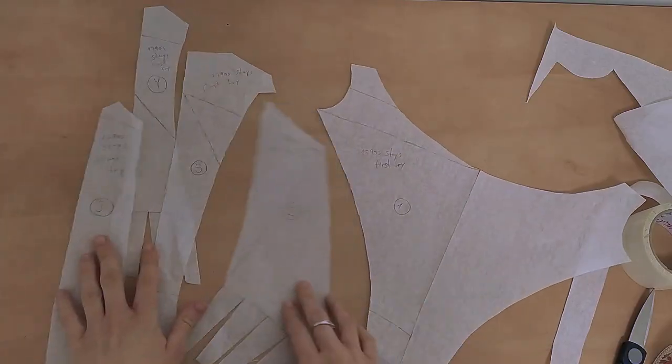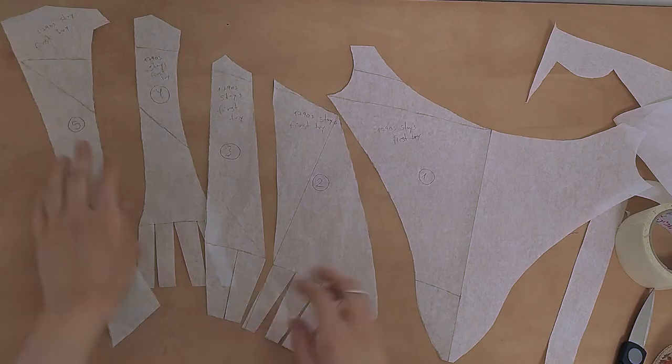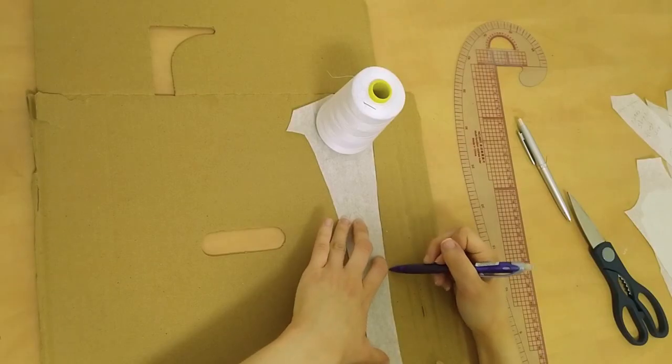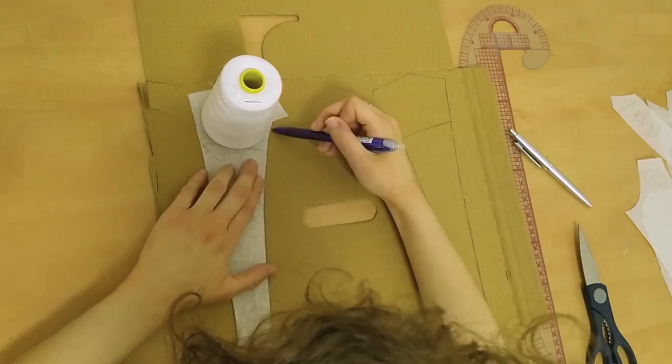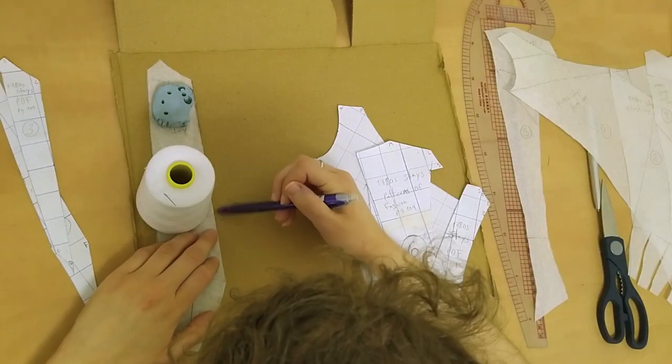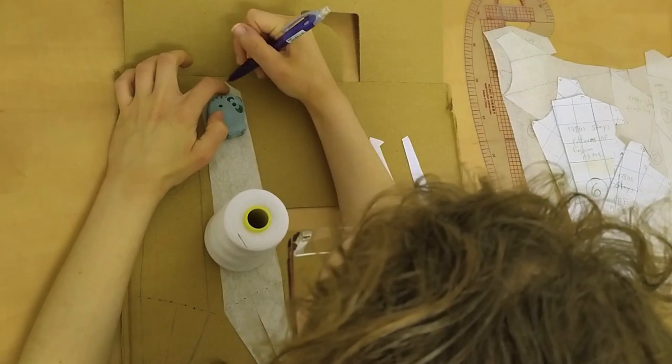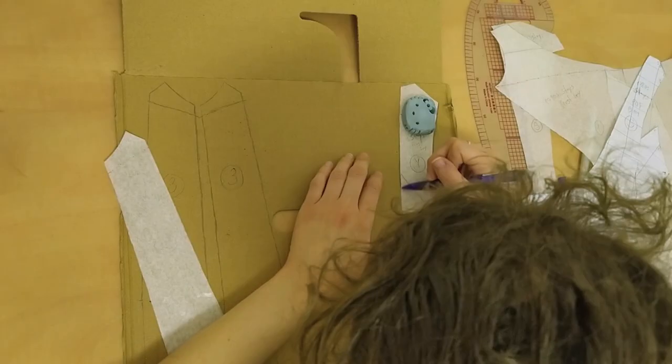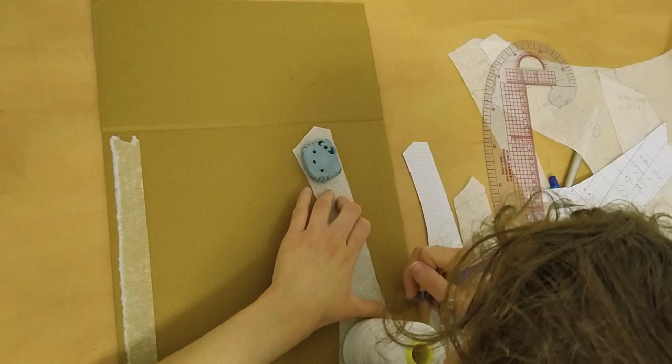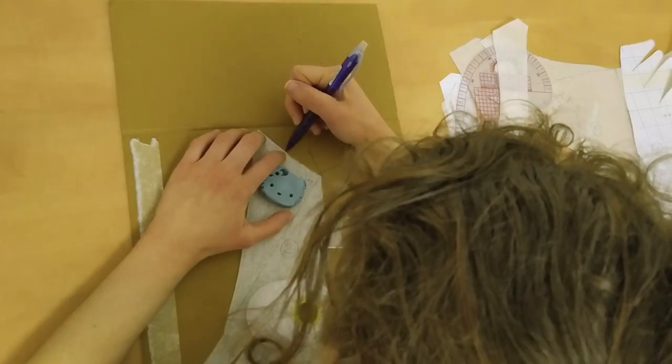And now, my dears, the time has come to make a cardboard mock-up. A mock-up is a trial run of a garment to solve any fit issues you may have before spending a lot of time and money making an actual garment. In the case of stays, it's a good idea to make a cardboard mock-up even before the fabric mock-up, because the cardboard itself behaves very much like finished boned stays, and it's quite quick to make.